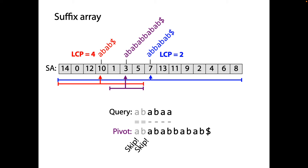So when we compare the query to the plum pivot, we skip the first two characters — we already know they're both A and B. Then we continue from position three: that's a match, that's a match, that's a match, and then we find the query is less than the pivot. Furthermore, we now know the LCP between the query and this new plum-colored pivot is 5. So we remember that information.